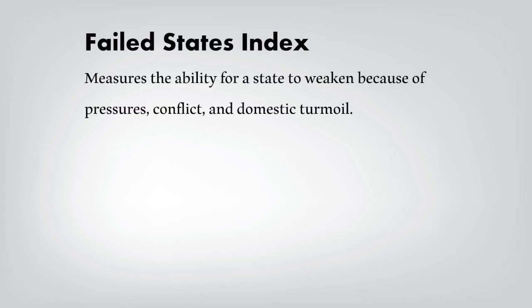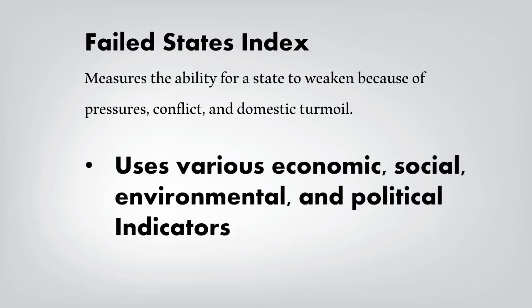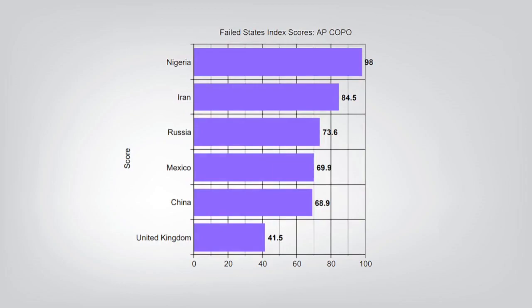The last measurement is the Failed States Index, which measures the ability for a state to weaken due to pressures, conflict, and domestic turmoil — basically the likelihood a country will break apart or experience major conflicts. It uses various economic, social, environmental, and political indicators. Nigeria has the highest failed states index score, which closely mirrors the Transparency International rankings. This suggests that the less transparent a country is, the higher the chance it will weaken or devolve.